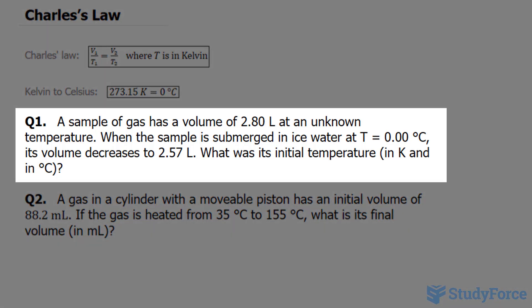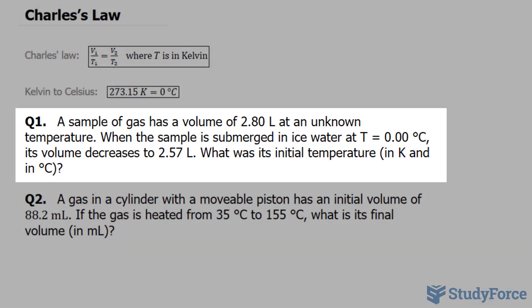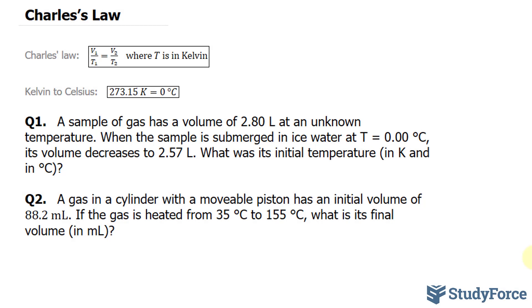Question 1 reads: A sample of gas has a volume of 2.80 liters at an unknown temperature. When the sample is submerged in ice water at a temperature of T equals 0.00 Celsius, its volume decreases to 2.57 liters. What was its initial temperature in Kelvin and in Celsius?